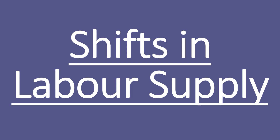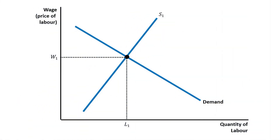Hello students, next topic is shifts in labor supply. As you can see in this figure, this is the basic format in which we have shown the initial situation. This is the demand curve for labor, this is the supply curve of labor, this is the equilibrium point, equilibrium wage rate, and equilibrium employment.